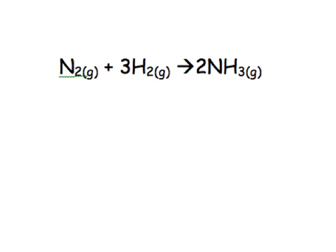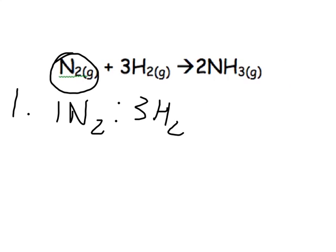It tells us that for every one molecule of nitrogen, you can write this down. For every one molecule of nitrogen, three molecules of hydrogen have to react. So one nitrogen reacts with three hydrogens to give me two molecules of ammonia. One molecule of nitrogen reacts with three molecules of hydrogen to give me two molecules of ammonia. That is the relationship that this shows us.